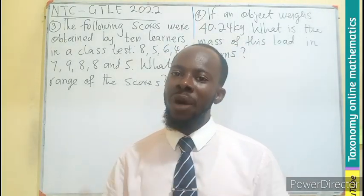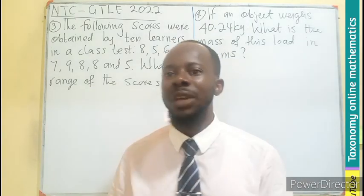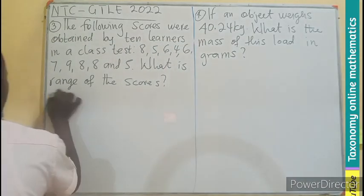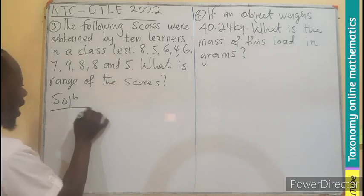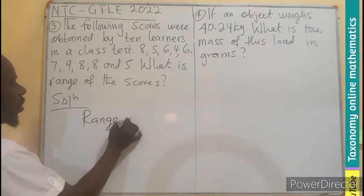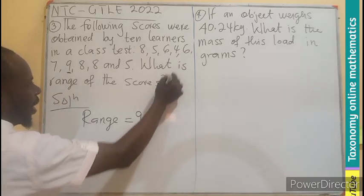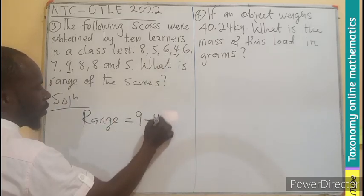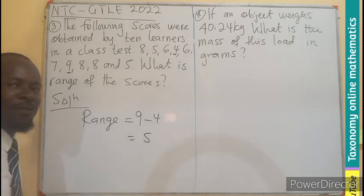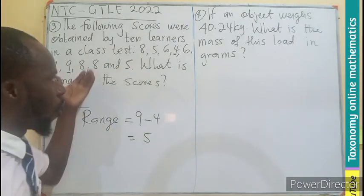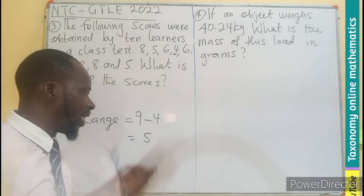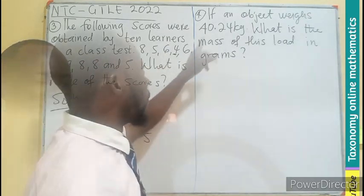The difference between the two gives us the range. Here the range we are looking for is the highest score, which is 9, then the lowest score is 4. So this gives us 5. The range of the scores in this class is 5.